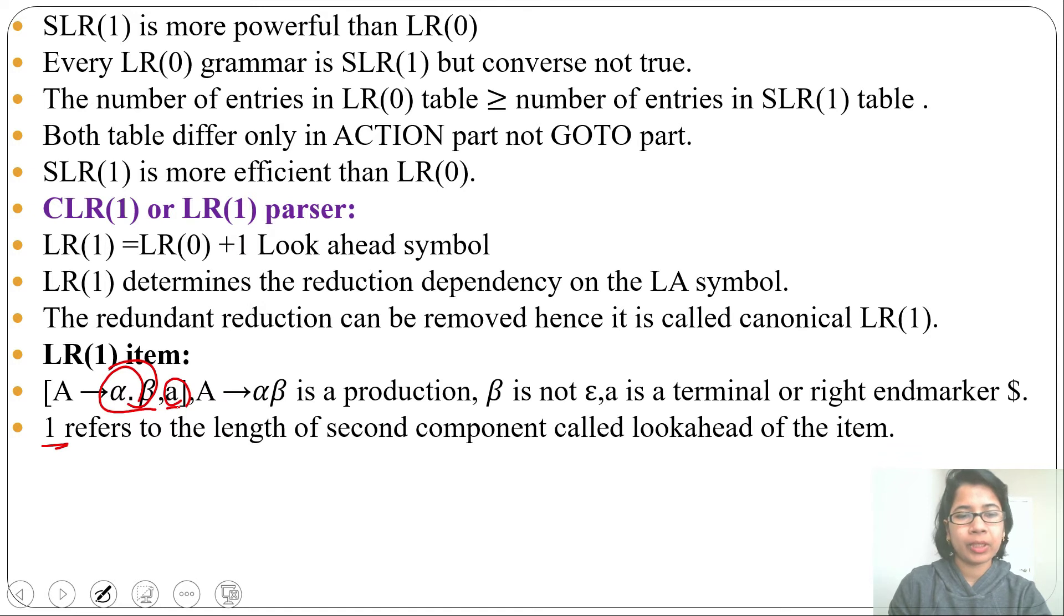So this one is for length of the second component, or you can say length of the lookahead. It can be 2, 3—that will be LR2, LR3. But in our syllabus just LR1 is given. Let's discuss LR1 only.